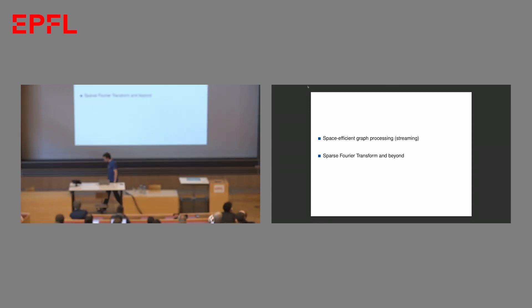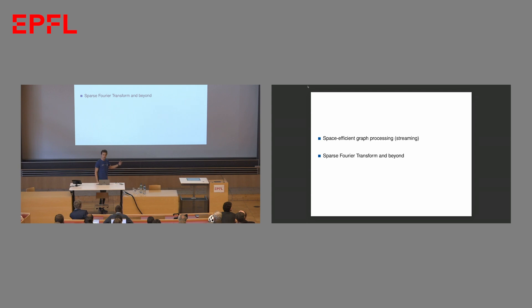First, I would like to talk about space efficient graph processing, known as graph streaming. What is this streaming model of computation? In a streaming model, we think of the algorithm as ingesting a very long stream of data items, like tweets, IP packets, or search queries. As the algorithm is ingesting the stream, its task is to maintain a small space summary of the stream so far. And from this summary, it should be able to approximate various stream statistics.